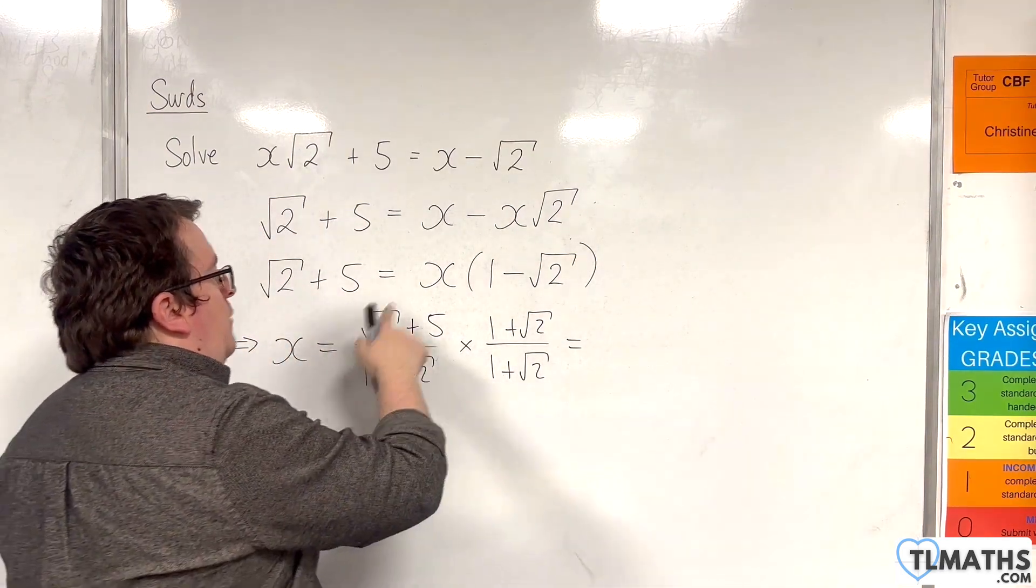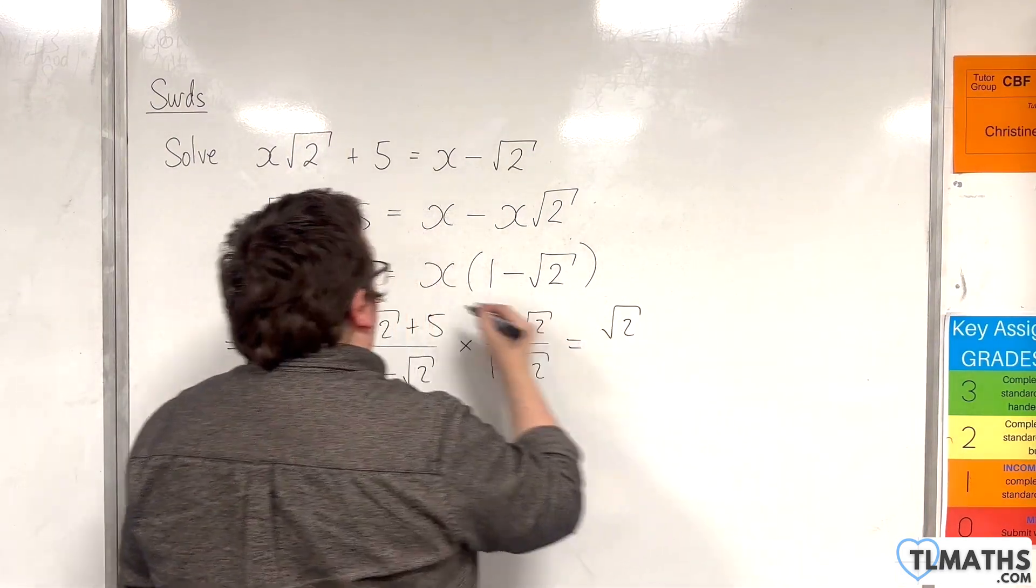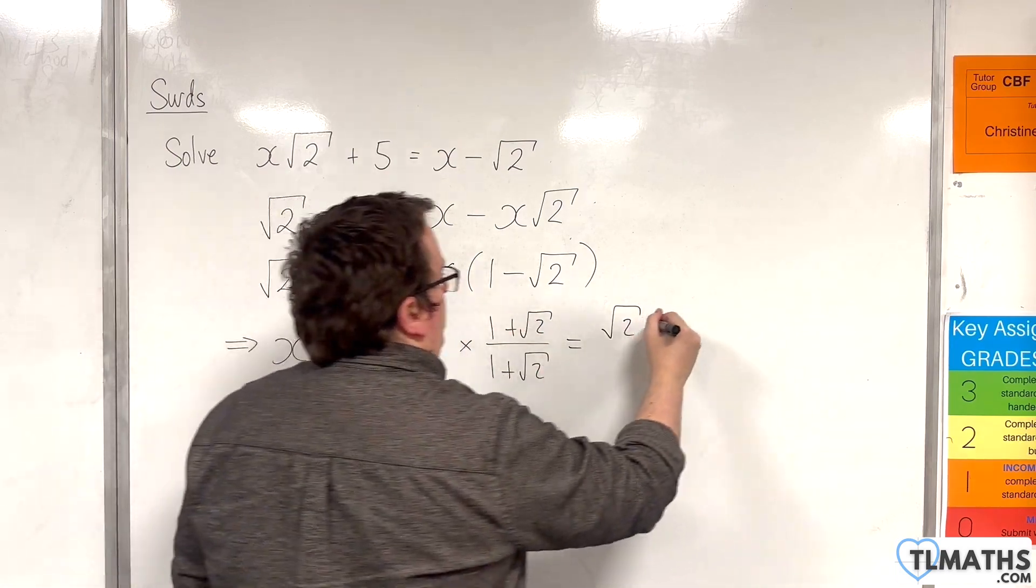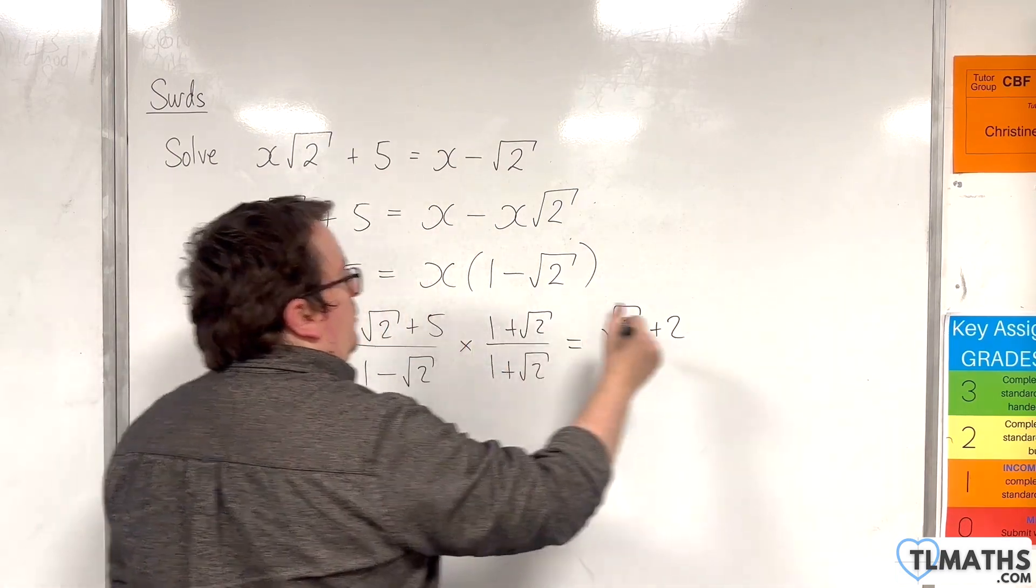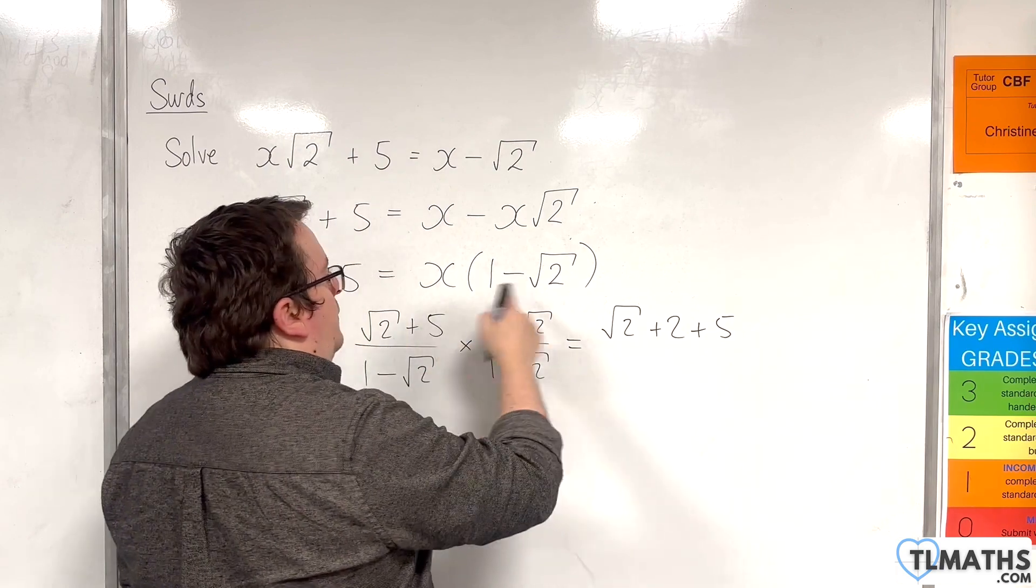And in the numerator, we're going to get √2. And then √2 times √2 is 2. And then 5 times 1. And then 5 times √2.